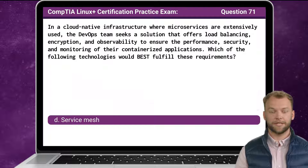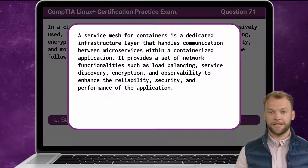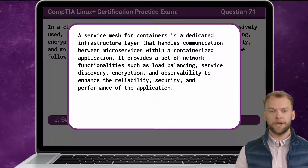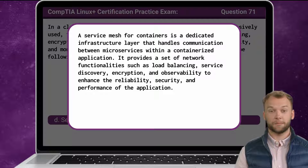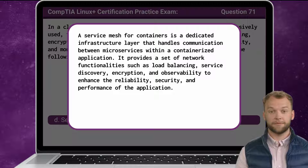The answer is D: Service Mesh. A service mesh for containers is a dedicated infrastructure layer that handles communication between microservices within a containerized application. It provides a set of network functionalities such as load balancing, service discovery, encryption, and observability to enhance the reliability, security, and performance of the application.